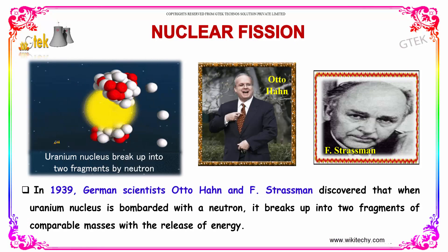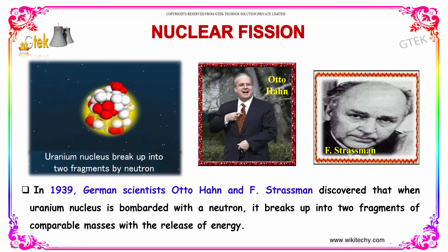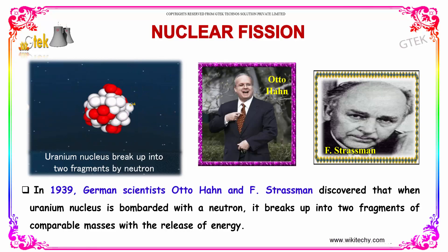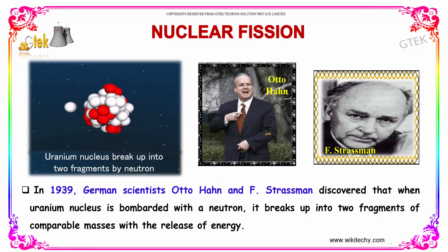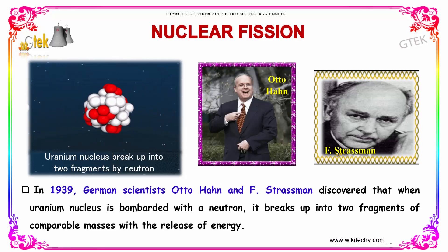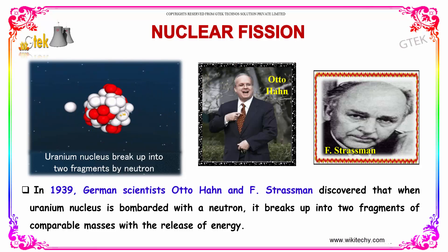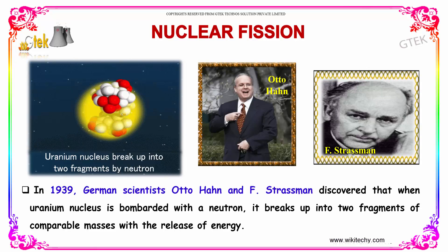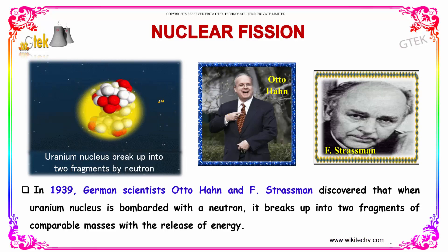You are able to see the uranium nucleus breaking up into two fragments by neutron power — this is nuclear fission. In 1939, the German scientists Otto Hahn and Strassman discovered that when a uranium nucleus is bombarded with a neutron, it breaks into two fragments of comparable masses with the release of energy.